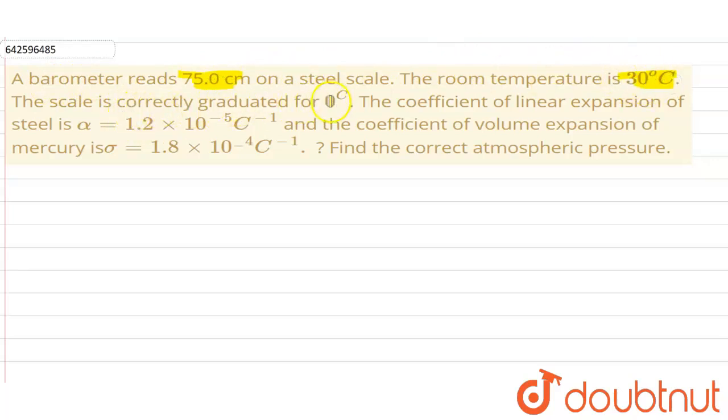The scale is correctly graduated for 0 degree Celsius. The coefficient of linear expansion of the steel is alpha equals 1.2 into 10 to the power minus 5 per degree Celsius, and the coefficient of volume expansion is 1.8 into 10 to the power minus 4 per degree Celsius. Find the correct atmospheric pressure.